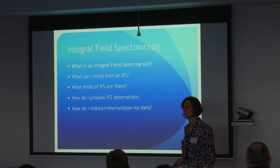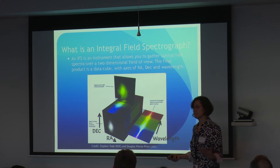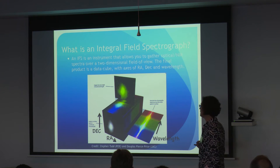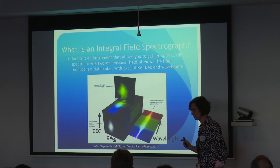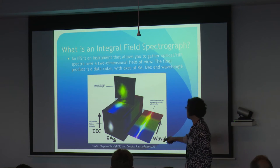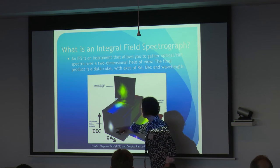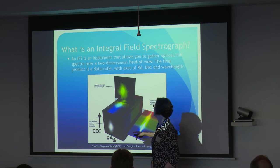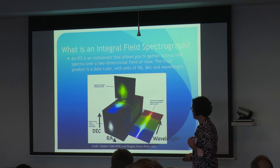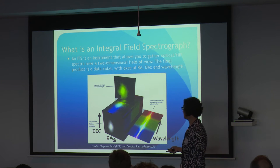We'll start with what is an integral field spectrograph - that didn't change in the last five years. They're really amazing instruments that allow you to gather optical and near-infrared spectra over a two-dimensional field of view. The radio people have been doing this for decades and think we're a bit slow. The final product is a data cube with spatial information - RA and Dec - plus wavelength information along the z-axis. This is a very powerful way of imaging the universe.